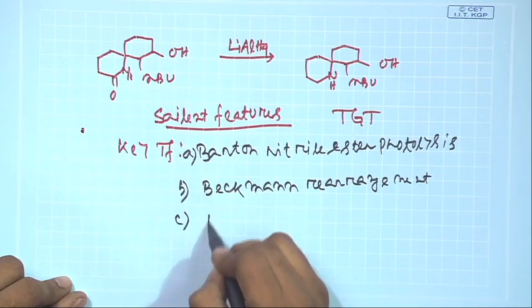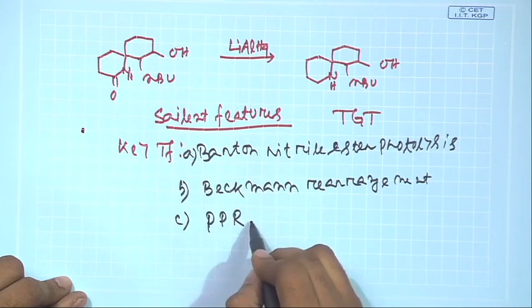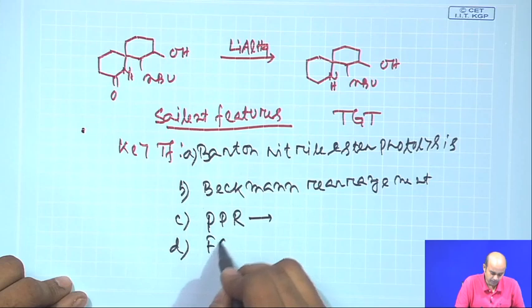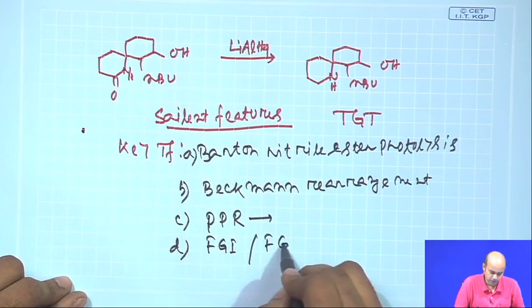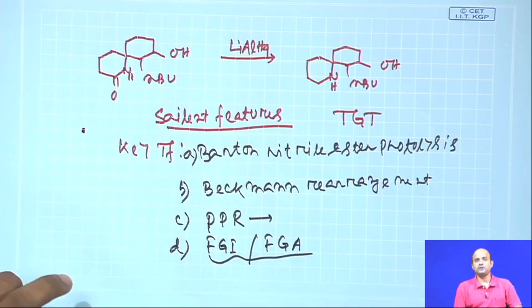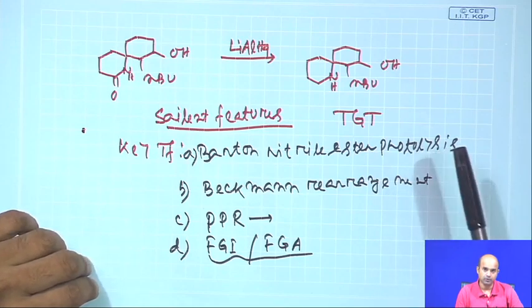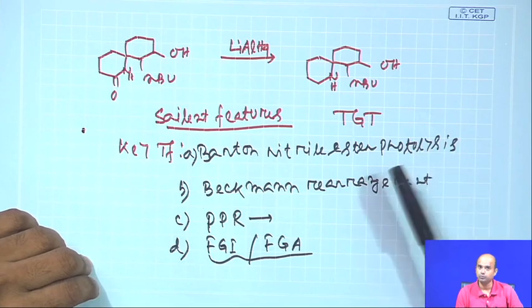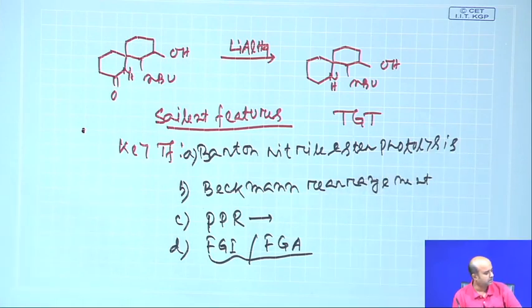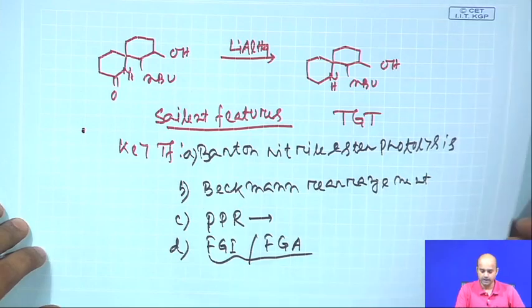In addition, you also do a Pinnacol rearrangement which was very crucial, and then a Beckman rearrangement used in the final stage, plus couple of functional group interconversions or functional group additions. Your main synthesis is basically a combination of all those things. But as I said, if you are not familiar with the Barton nitrile ester photolysis it is very difficult to design the entire pathway. This shows how different powerful transformations can be applied in a sequential manner to give you a complex or medium-complexity size molecule.